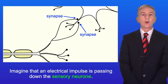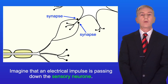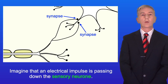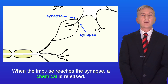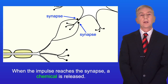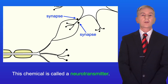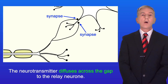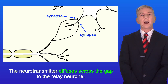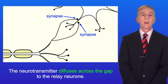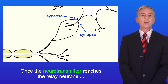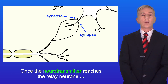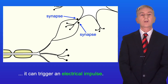Imagine that an electrical impulse is passing down the sensory neuron. When the impulse reaches the synapse, a chemical is released. This chemical is called a neurotransmitter. The neurotransmitter diffuses across the gap to the relay neuron. Once the neurotransmitter reaches the relay neuron, it can trigger an electrical impulse.